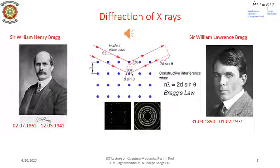Independently, two English physicists, William Henry Bragg and his son William Lawrence Bragg, fully exploited the wave nature of X-rays and simplified Von Laue's analysis. W. L. Bragg pointed out in 1912 that each of the images surrounding the bright central spot of the Laue photograph should be interpreted as the reflection of the incident X-ray beam from a unique set of planes of atoms within the crystal. Each dot in the pattern corresponds to a different set of planes in the crystal. It turns out from an analysis of the scattering that there are two conditions for constructive interference of scattered X-rays from two successive layers of atoms in a crystal.